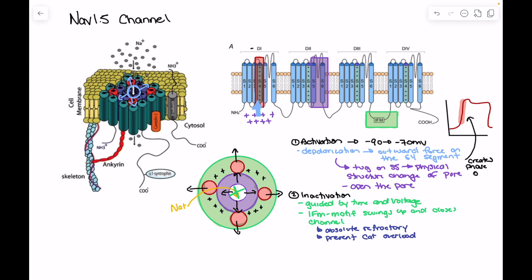In terms of recovery, release of the IFM bar occurs when we have repolarization — the bar stays in place until we return to near resting membrane potentials of around negative 80 to negative 90 millivolts. This is relevant to our sodium channel blockers: class 1B antiarrhythmics preferentially bind the channel in its inactivated state, and since ischemic tissue remains in the inactivated state more, class 1B drugs target ischemic cells more readily.